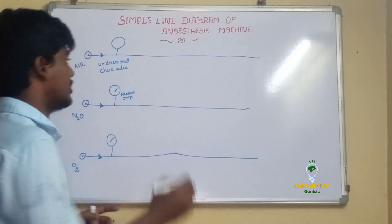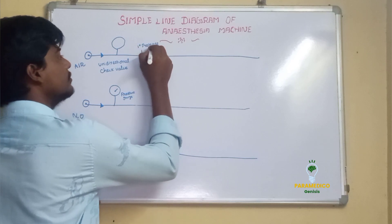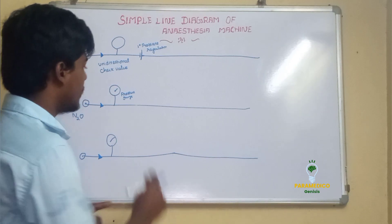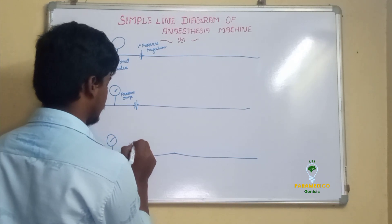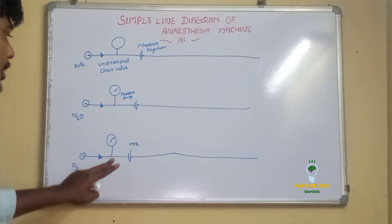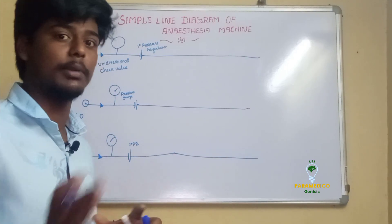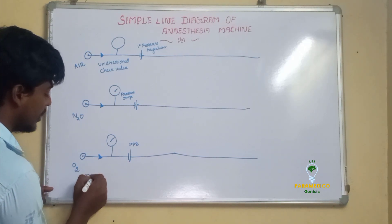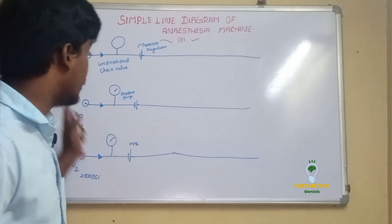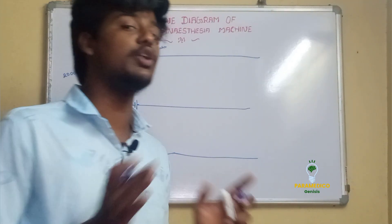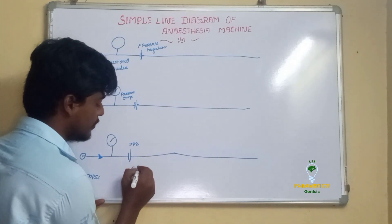After the pressure gauge, the very important structure is called the primary pressure regulator. The primary pressure regulator is present in all three lines. It helps to reduce the pressure of the medical gases. Oxygen has a pressure of 2000 psi, nitrous oxide has 760 psi, and air also has around 2000 psi — these are very high pressures. The pressure regulator reduces these pressures down to 45 to 60 psi.